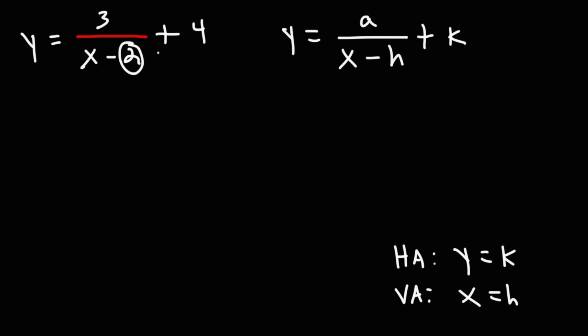So in this example, we can see h is 2, k is 4. So the horizontal asymptote is going to be y is equal to 4, and the vertical asymptote is x is equal to 2.